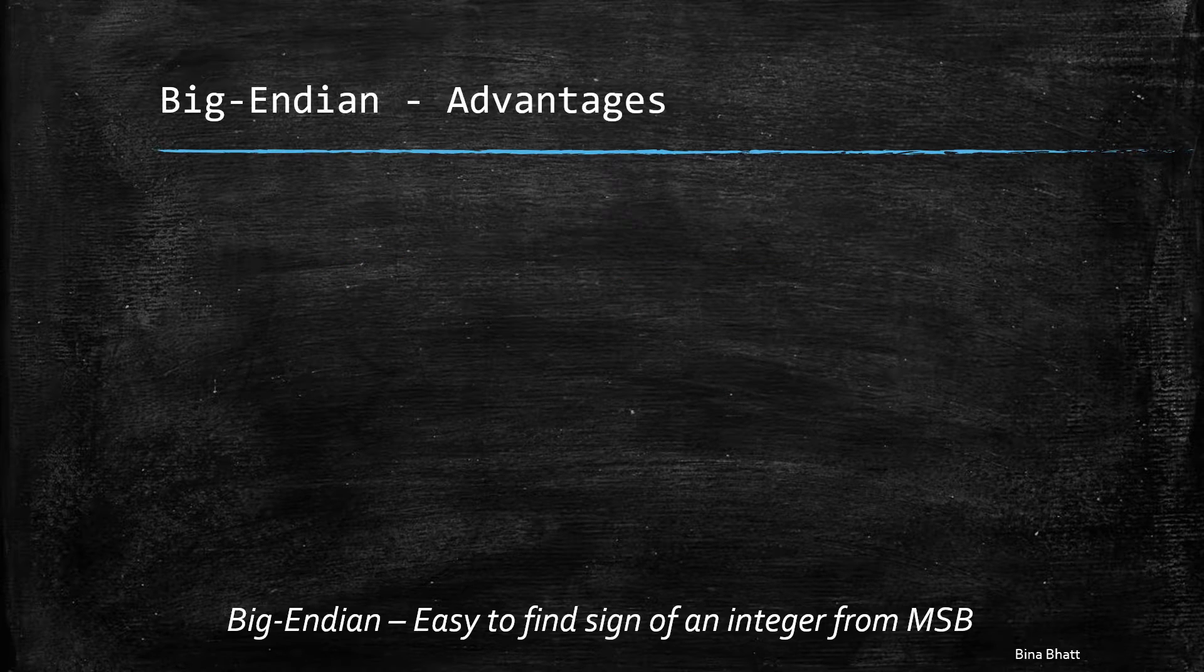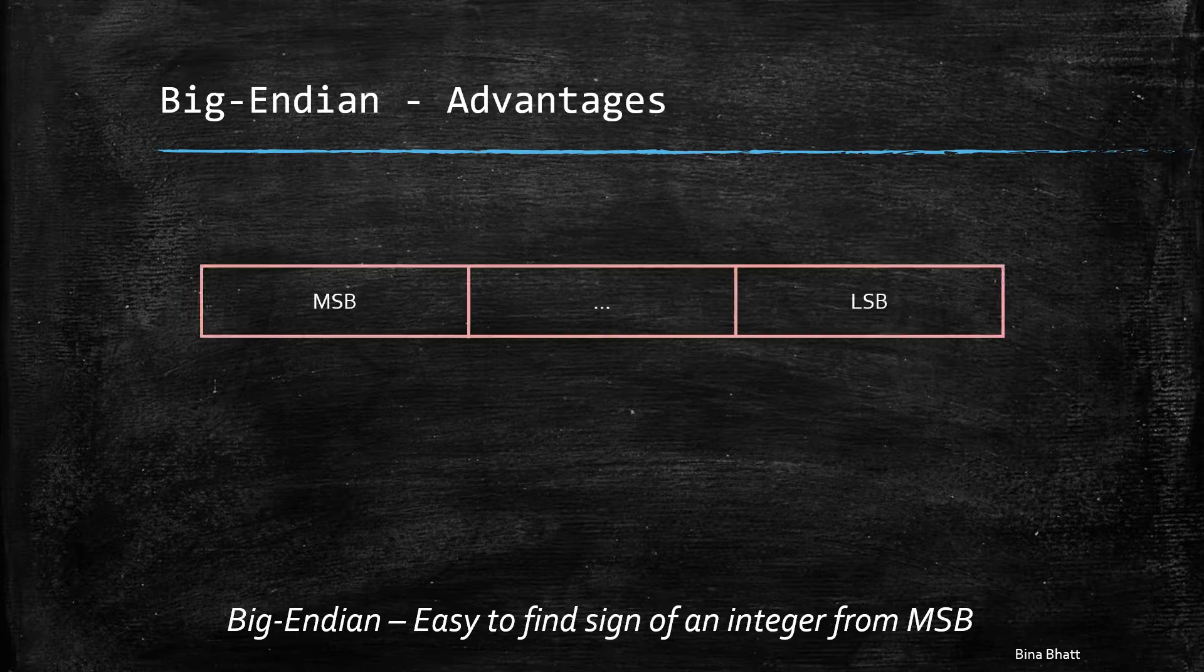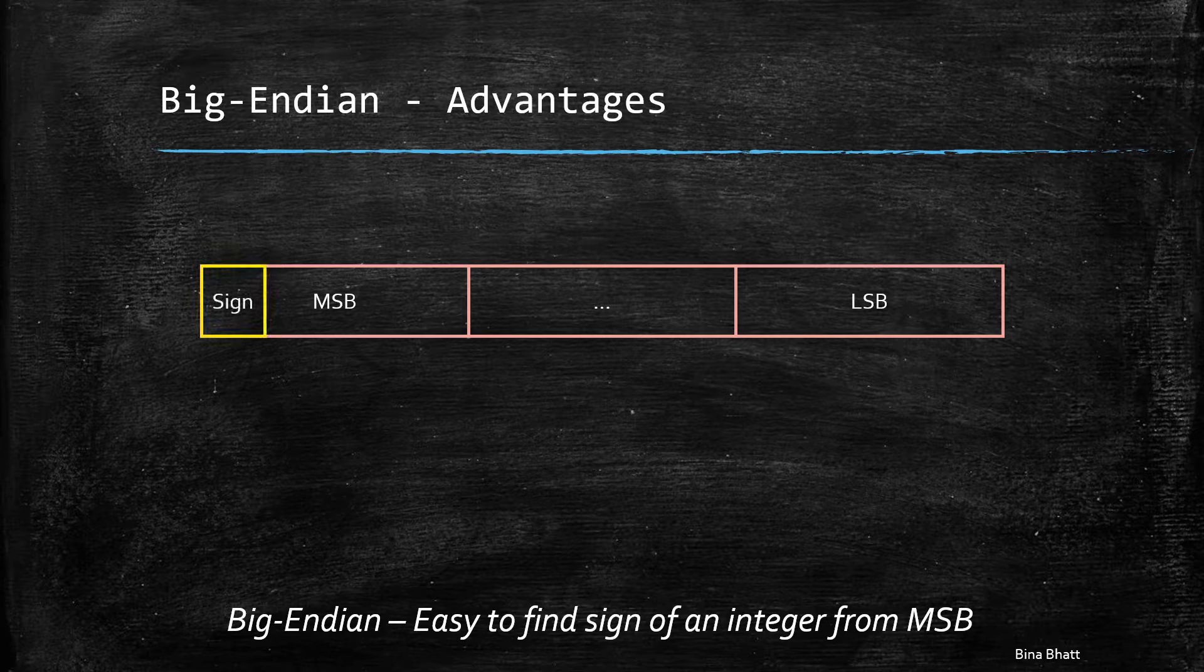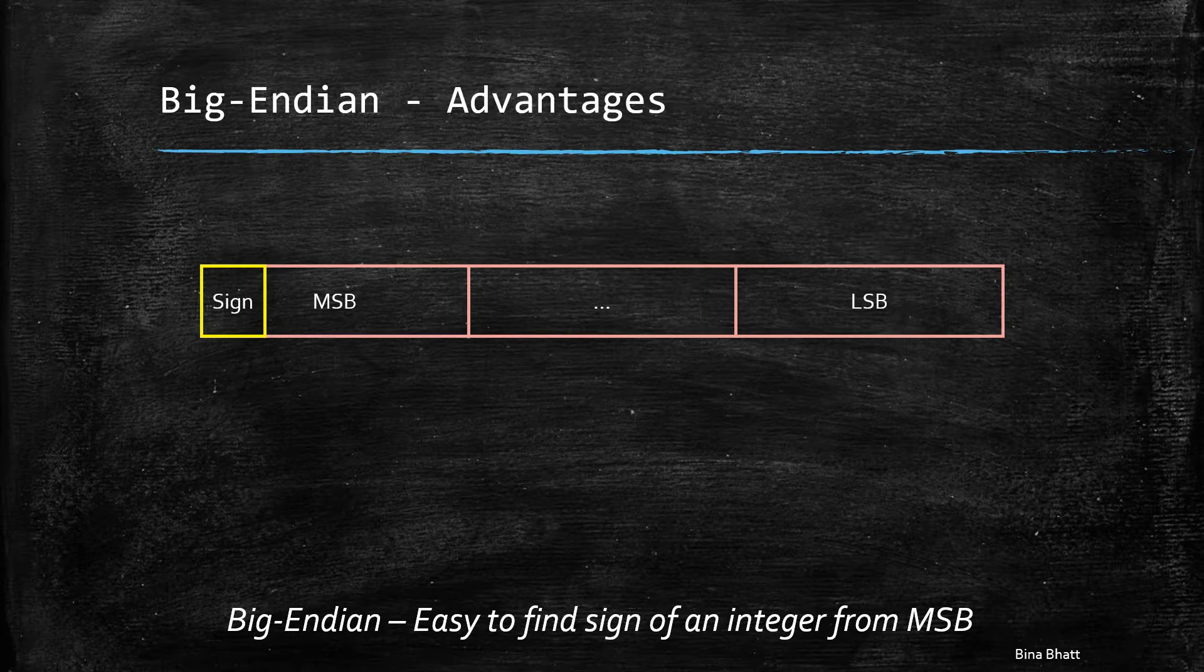Deciphering the sign of an integer also becomes simpler with big endian as the sign bit is the first bit in the most significant byte.